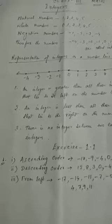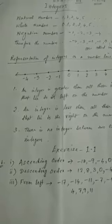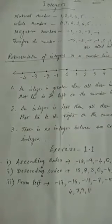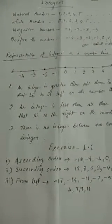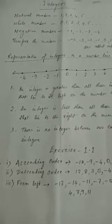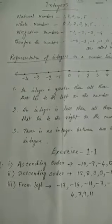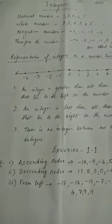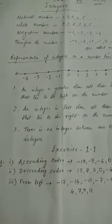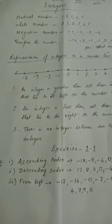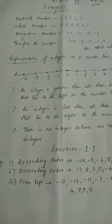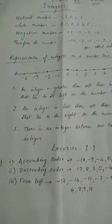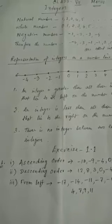Now, in previous classes you have learned about different types of numbers, like natural numbers, whole numbers, then negative numbers, positive numbers, even numbers, odd numbers, etc. Now, let us discuss these numbers once again first.